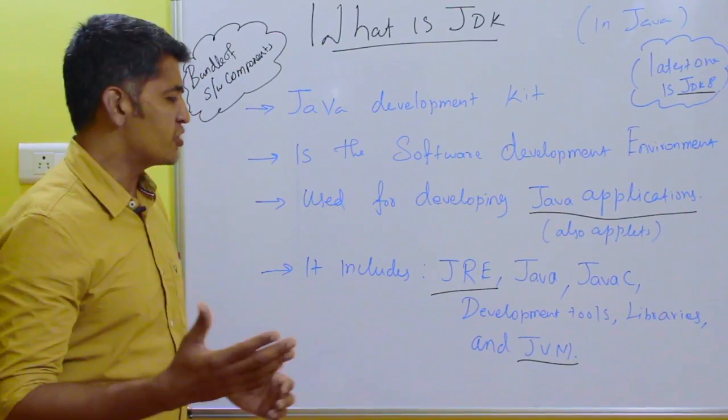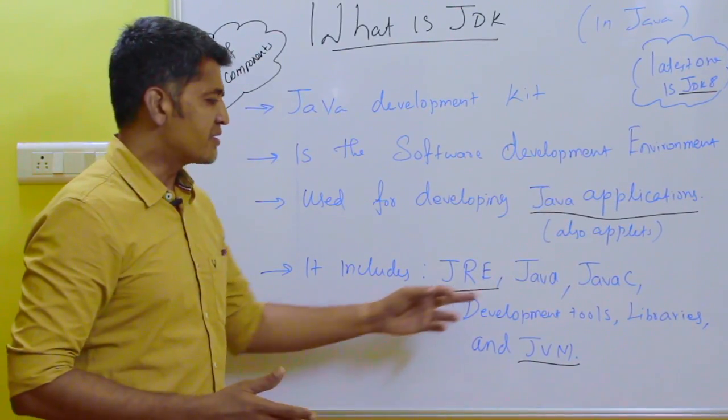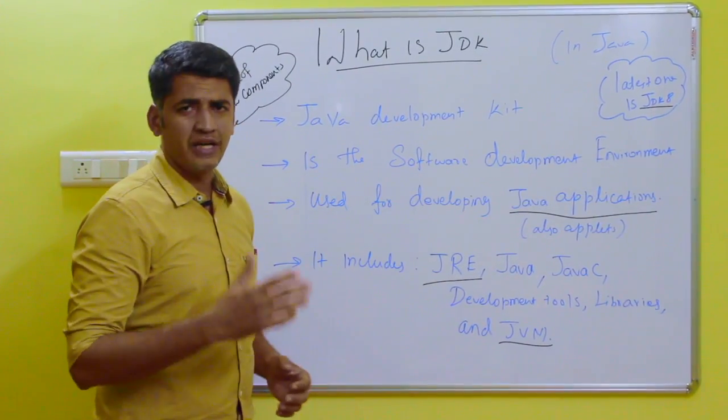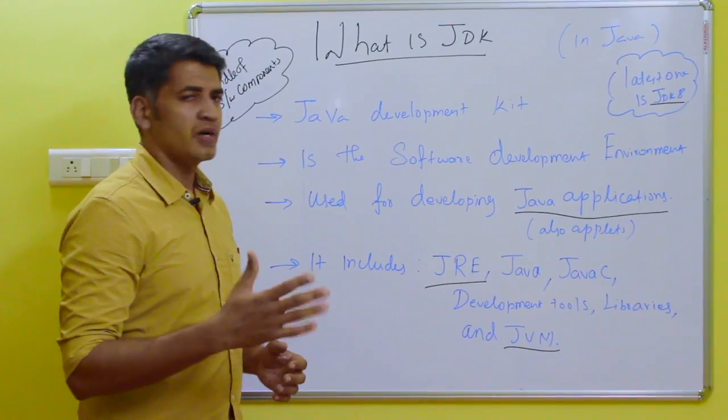First one is JRE, which means Java Runtime Environment. Second one is Java, which is a loader or interpreter. Third one is JavaC, which is a Java compiler.